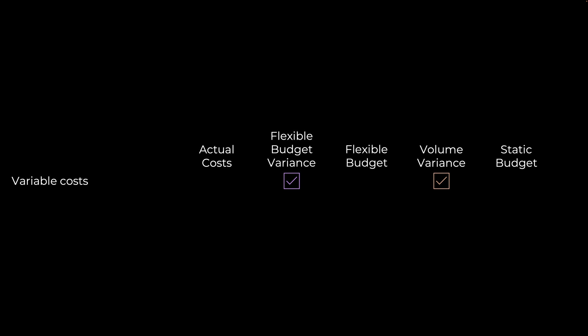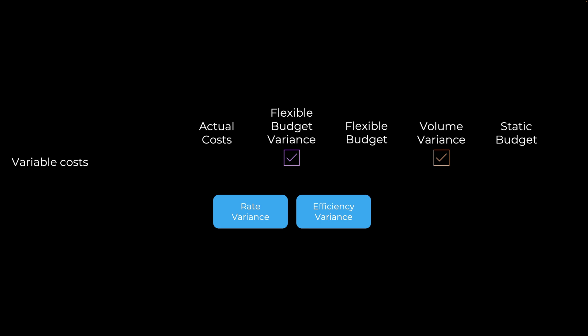When we compare the flexible budget to the actual costs, we get something called the flexible budget variance. These different columns and variances are usually compared on a line-item-by-line-item basis. In prior lessons, we looked at variable costs such as direct materials or direct labor, and we saw that they have both a volume variance and a flexible budget variance. We also saw that the flexible budget variance can be broken down into a rate variance and an efficiency variance, and those two variances added together equal the flexible budget variance.